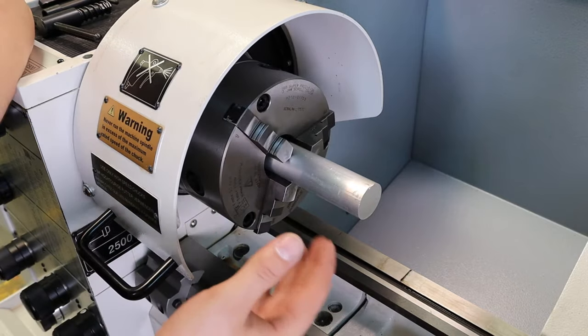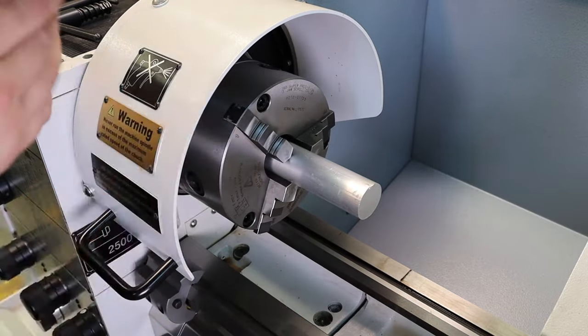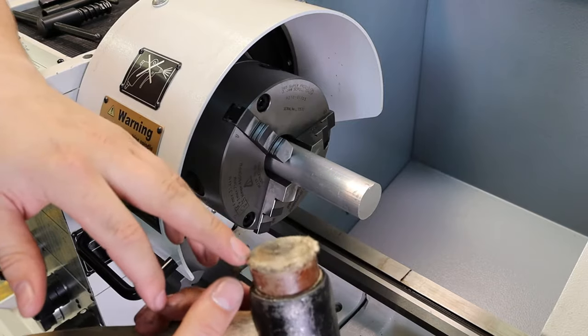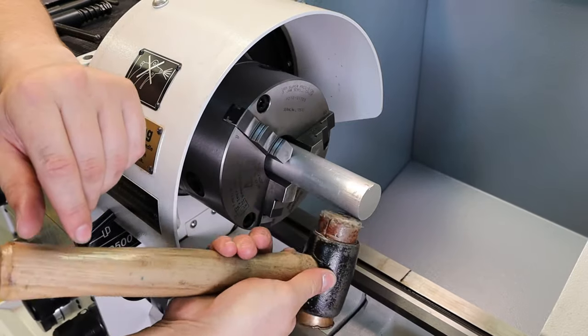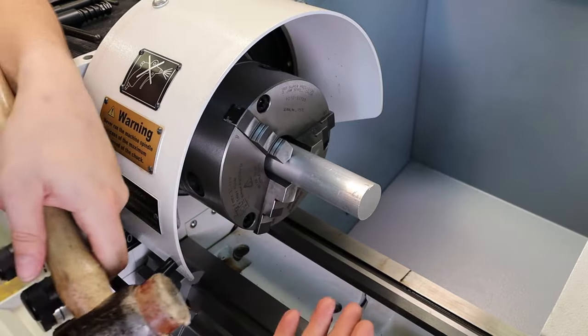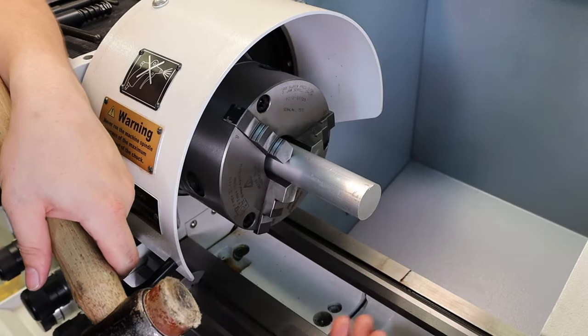But in the case that it isn't, what we can do is use a hide mallet to give it a gentle tap one way or the other. But in order for that to happen, you need to know which direction to tap it in.